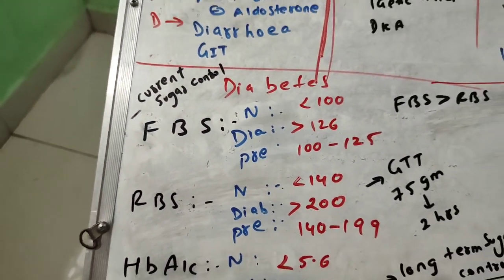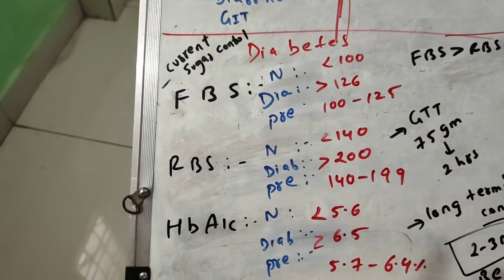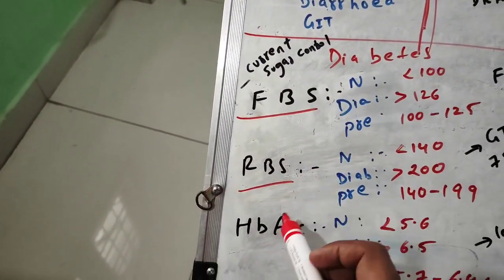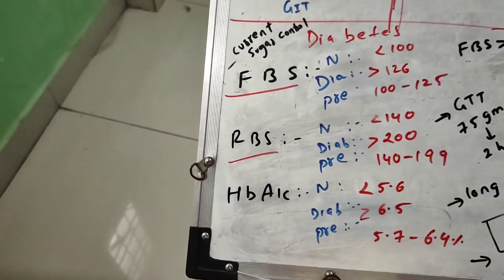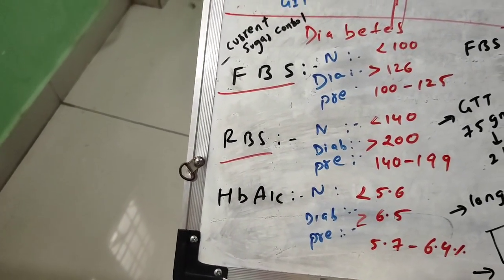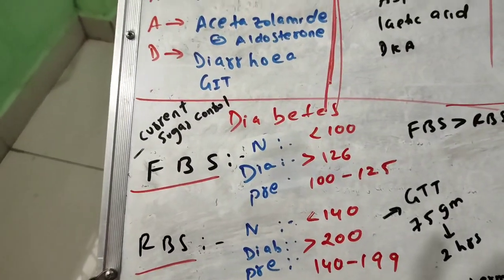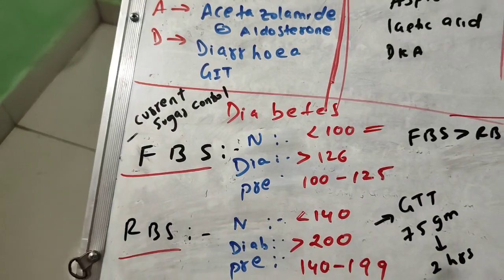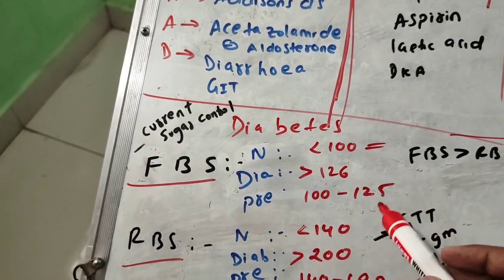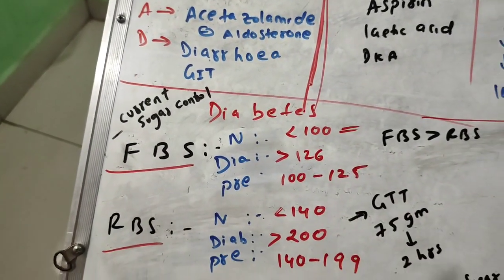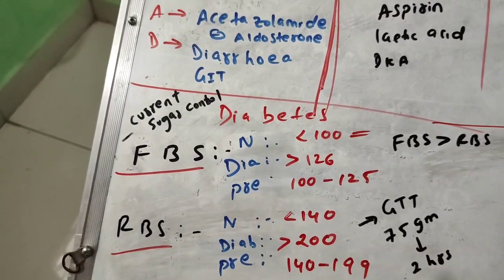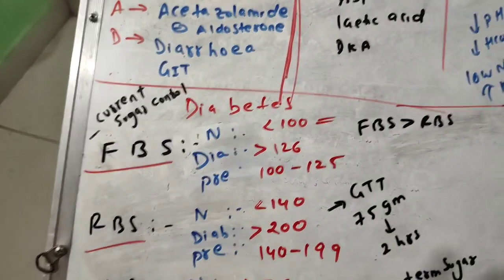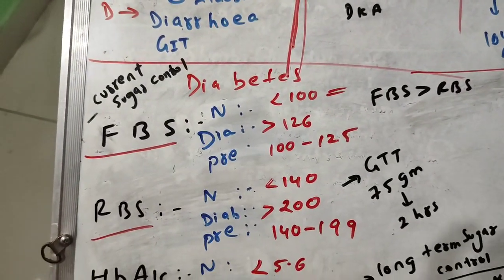For the exam, remember the diagnostic values. For FBS (Fasting Blood Sugar): normal is less than 100, diabetic is more than 126, and pre-diabetic is between 100 to 125.